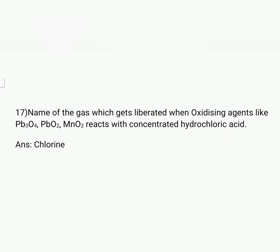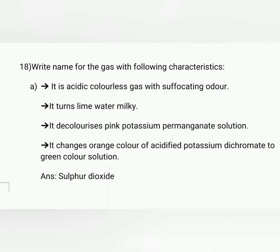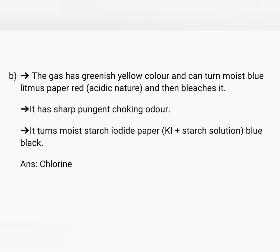Name the gas which is liberated when an oxidizing agent like Pb3O4 (tri-lead tetra oxide), lead dioxide (PbO2), or MnO2 reacts with concentrated hydrochloric acid. Answer: chlorine. Write the name for the gas with the following characteristics: acidic gas which turns lime water milky, decolorizes pink potassium permanganate solution, and also changes the color of potassium dichromate. Answer: sulfur dioxide.